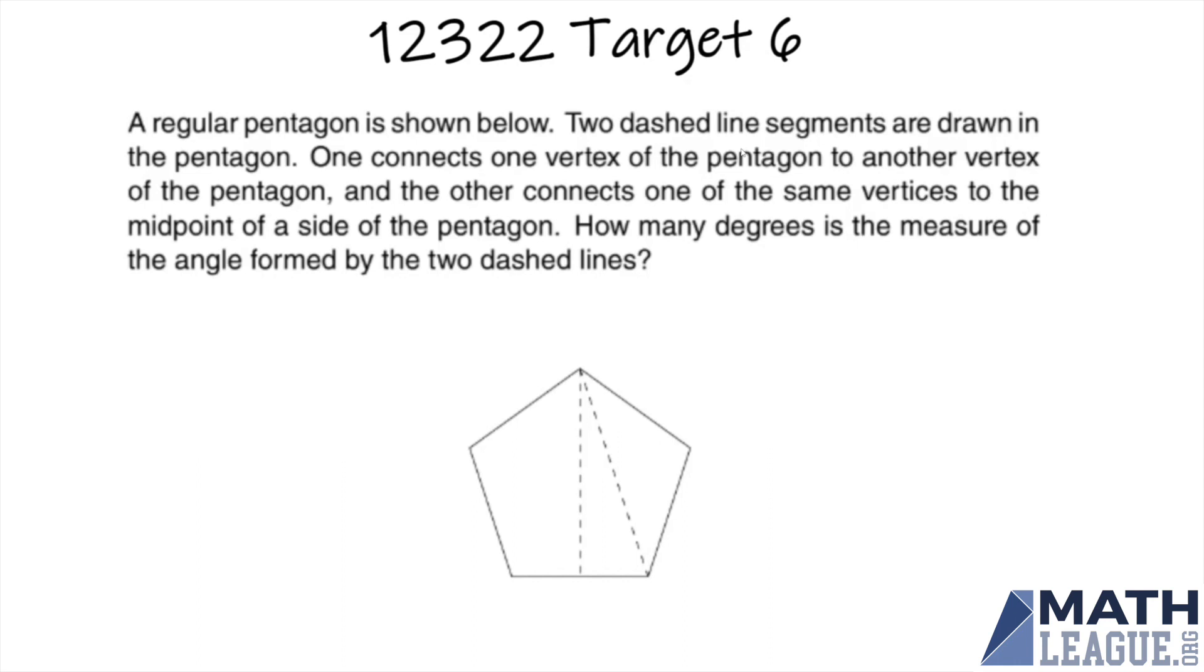How many degrees is the measure of the angle formed by the two dashed lines? There are a couple of steps we need to do to find the angles in this diagram. The first step is to note that because this is a regular pentagon with an odd number of sides, this middle segment that goes through the midpoint is actually a perpendicular bisector because of symmetry. Therefore, this is a 90 degree angle.